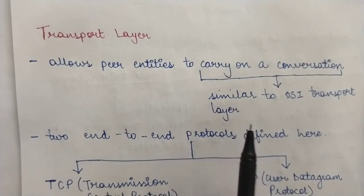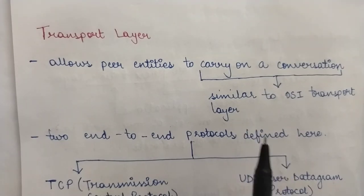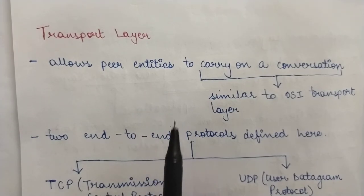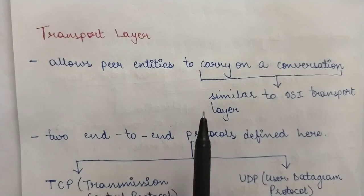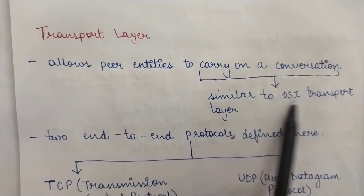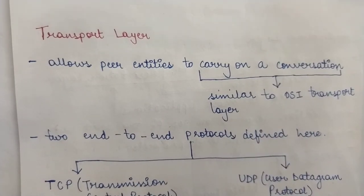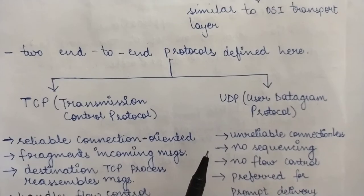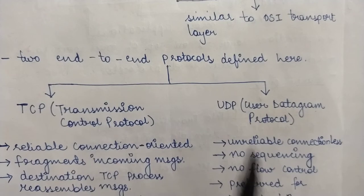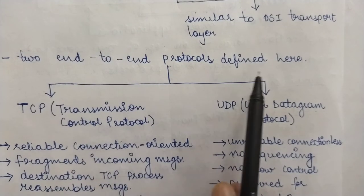The source and destination can directly carry on a conversation — such layers are known as end-to-end layers. It also allows peer entities such as two people, two routers, or two processors on the same level to directly carry on a conversation using the transport layer of the TCP/IP reference model. In this respect, it is similar to the OSI transport layer. Two protocols are defined at this layer — two end-to-end protocols.